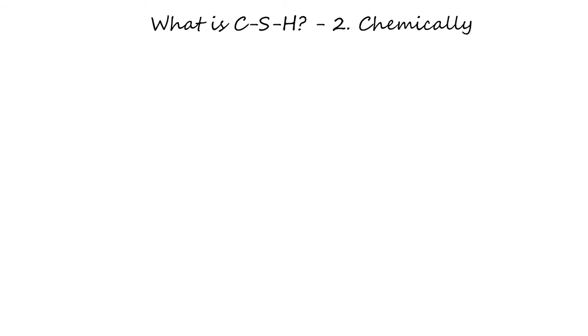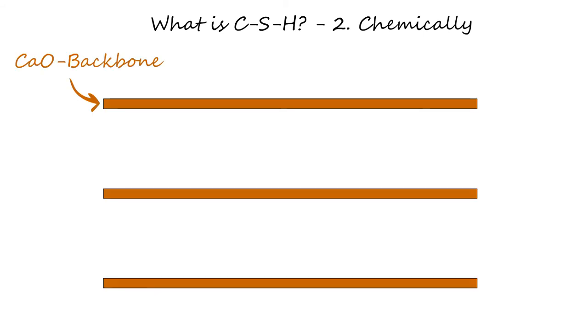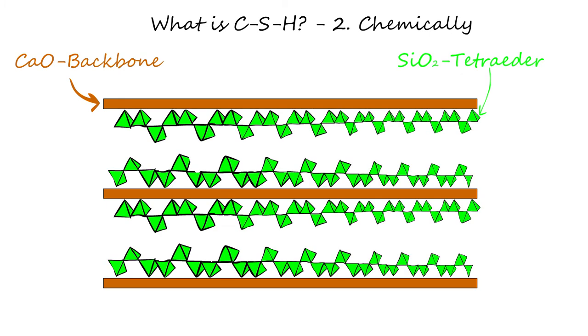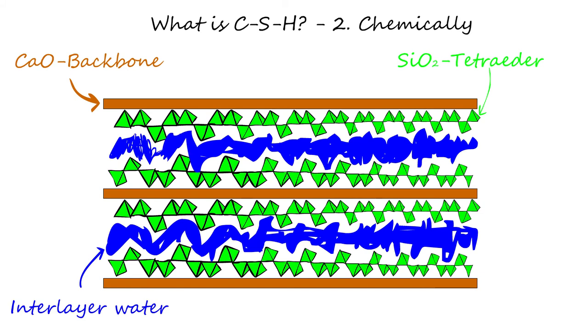CSH is believed to be very similar to the mineral tobermorite. Tobermorite consists of calcium oxide layers or sheets. On the surface of these layers, silica chains of infinite length in a perfect crystal are bound. The space between these layers is referred to as the interlayer space and contains water, which is in tobermorite a part of the structure. For the tobermorite modification considered relevant for cement, the spacing between the layers is 1.4 nanometers.